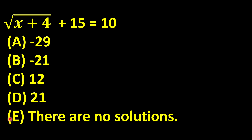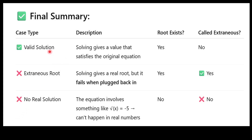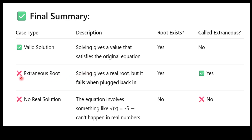Now we will discuss three cases: valid solution, extraneous root, and no real solution. A valid solution is when solving gives a value that satisfies the original equation — the root exists and is valid. An extraneous root is when you solve a square root equation and it gives you a real solution, but when you plug that value back into the original equation, it does not satisfy it. So a root exists but it is called extraneous.